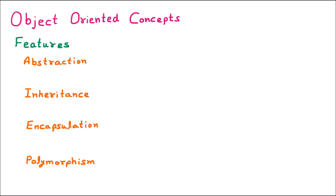Now we are learning the object-oriented concepts. Any language which supports four features — abstraction, inheritance, encapsulation, and polymorphism — is called an object-oriented programming language.